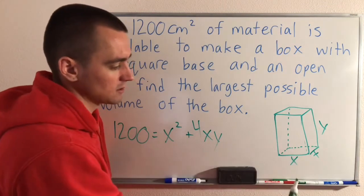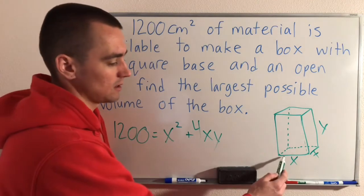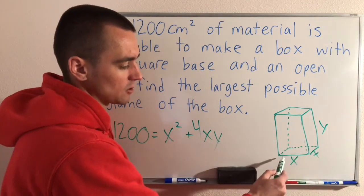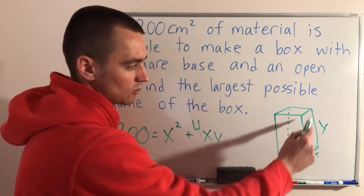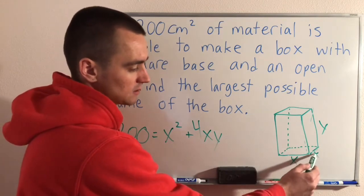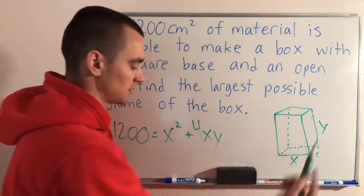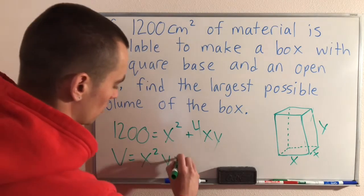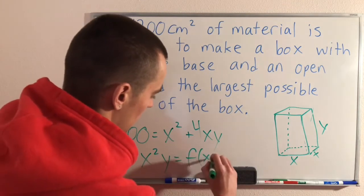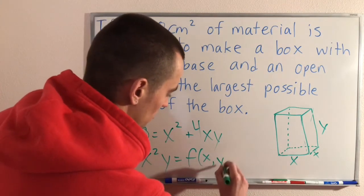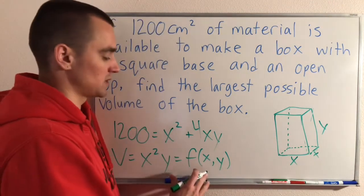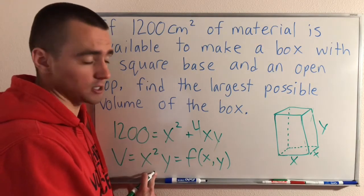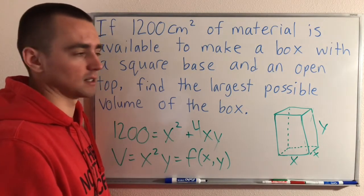What is the volume of this box? The volume of any rectangular prism is just the width times the length times the height. So this side times this side times this side gives us our volume, which is x times x times y, which is x squared times y. So the volume of this box is x squared y, which we'll call our function of x and y. It's a multivariable function at this point, and we're going to simplify this down to a single variable equation so that we can apply optimization techniques.